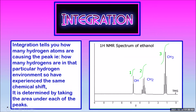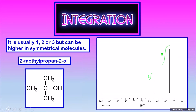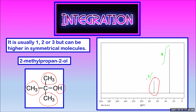Integration tells you how many hydrogens are making that peak — determined by comparing the area under each peak. In ethanol, the hydroxyl group hydrogen has an integration of one, the CH2 has an integration of two, and the CH3 has an integration of three. Usually integrations are one, two, or three, but if a molecule is symmetrical, there might be lots of hydrogens in the same environment. In 2-methyl-propan-2-ol, all the hydrogens in the three CH3 groups are in the same environment. The hydroxyl hydrogen gives the peak with higher chemical shift and integration one, while the three CH3 groups give a lower chemical shift peak with integration nine.